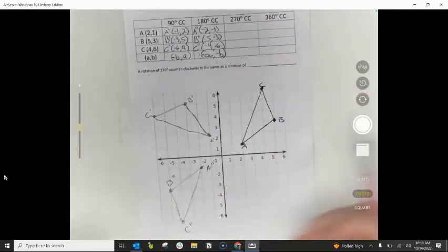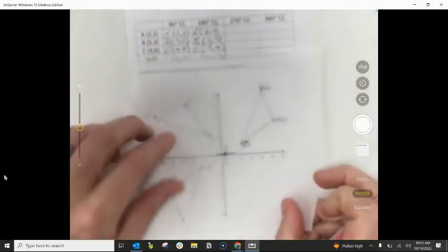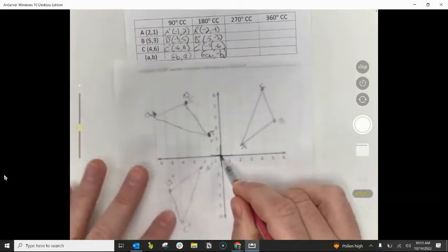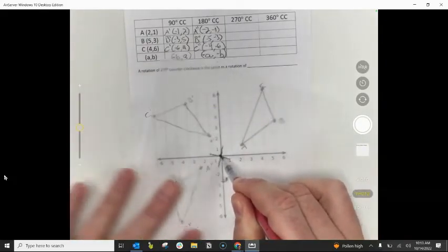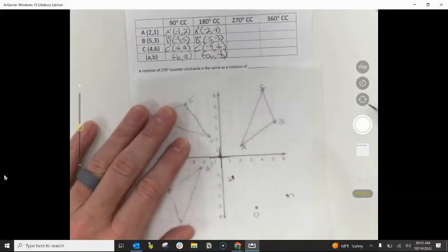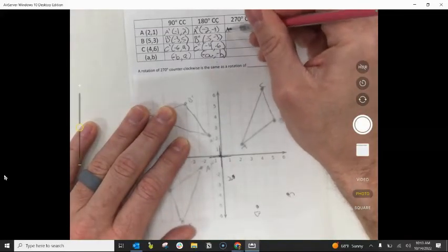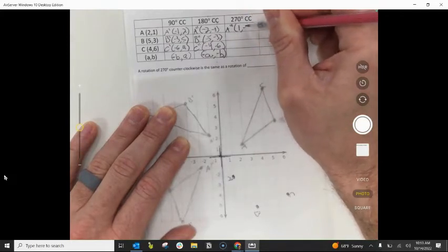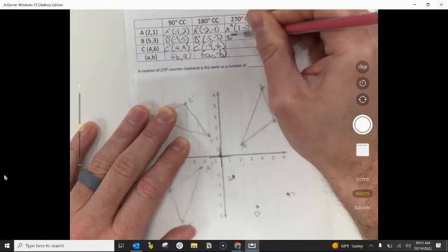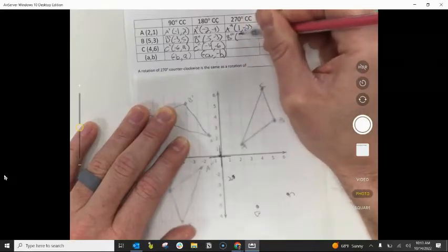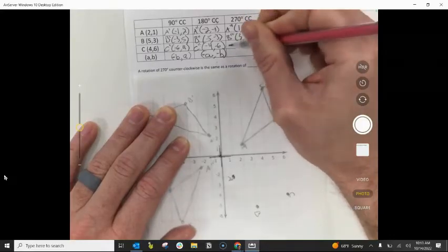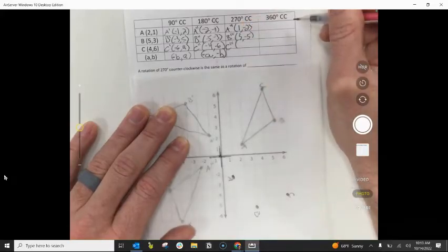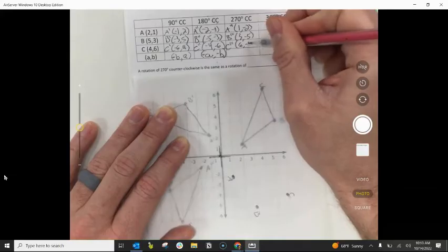Now we're at our last rotation, which is a 270 degrees counterclockwise rotation. So 90 degrees, 180, 270 would put us right here. So it looks like our A triple prime is (1,-2), B triple prime is (3,-5), C triple prime is (6,-4).